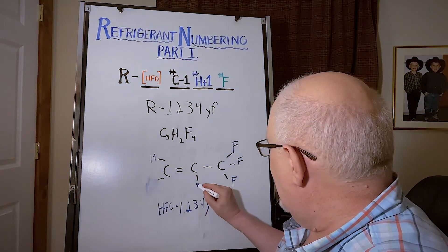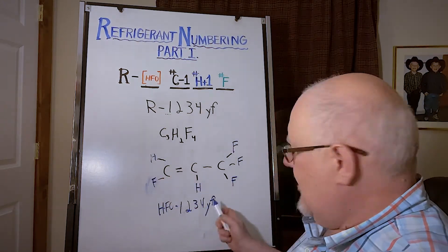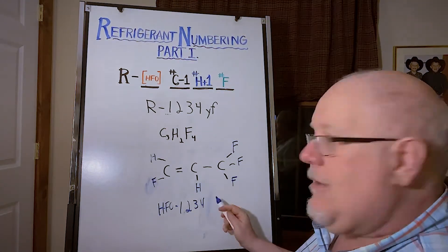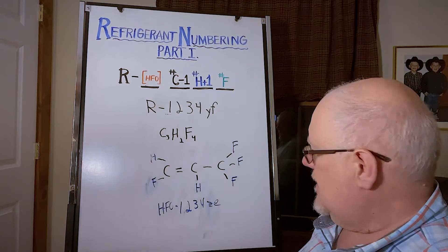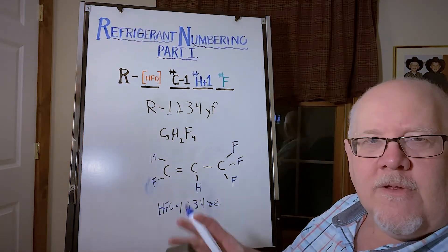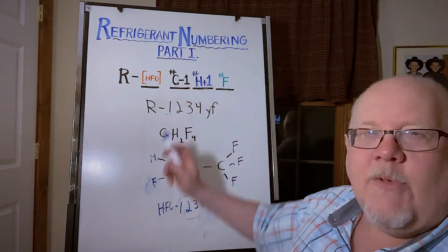So this is 1234yf. If these were switched and we had a hydrogen here and here, then this would become another isomer, 1234ze. You may have heard of 1234ze. Again, smaller case letters out here do the arrangement, these numbers in here off of this formula give you the exact chemical makeup of the refrigerant.